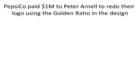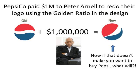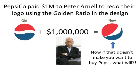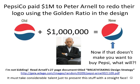I don't want to bias your opinion, but I'm inclined to go with number three. And speaking of bulldust, you've got to love this. Pepsi company paid $1 million to Peter Arnell to redo their logo using the golden ratio in the design. So we have the old Pepsi logo plus $1 million and Peter Arnell equals the new logo. If that doesn't make you want to buy Pepsi, what will? Read Arnell's 27-page document titled 'Breathtaking Design Strategy' — it's a real hoot. I've got to give him a lot of credit; it must take considerable talent just to present this stuff with a straight face.